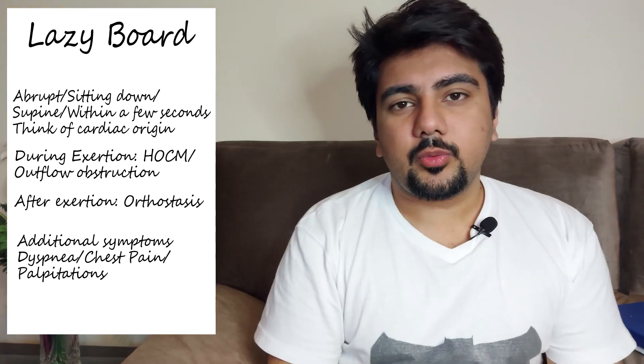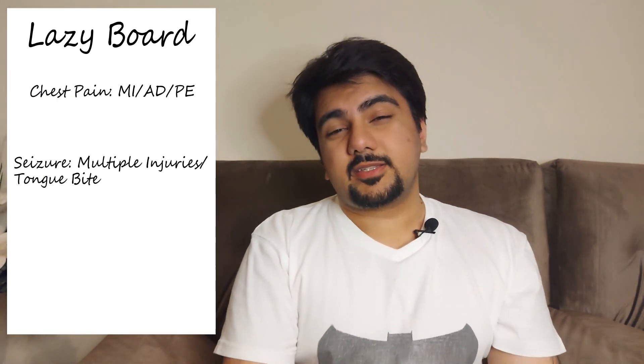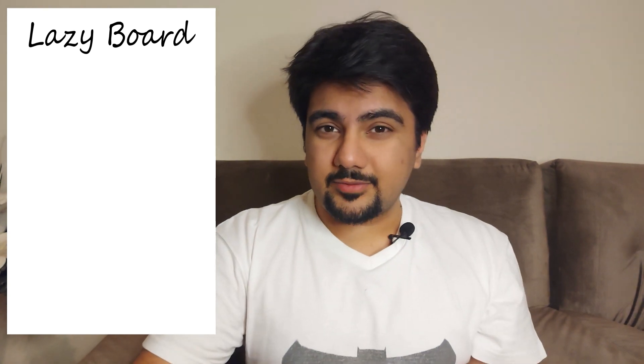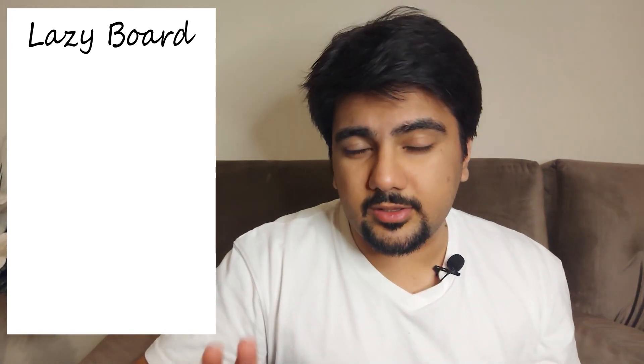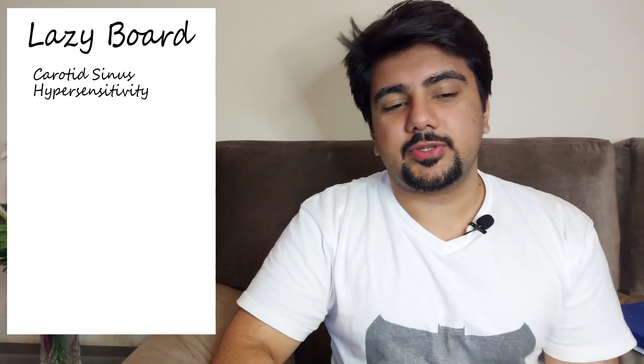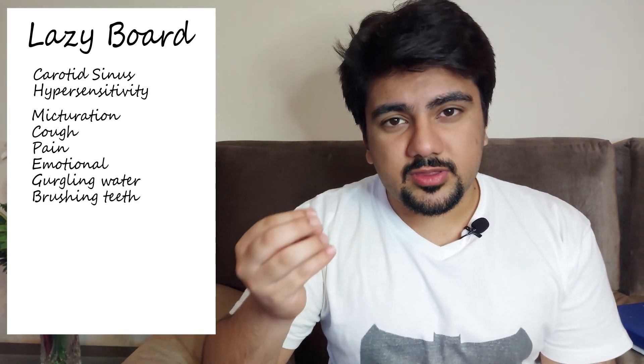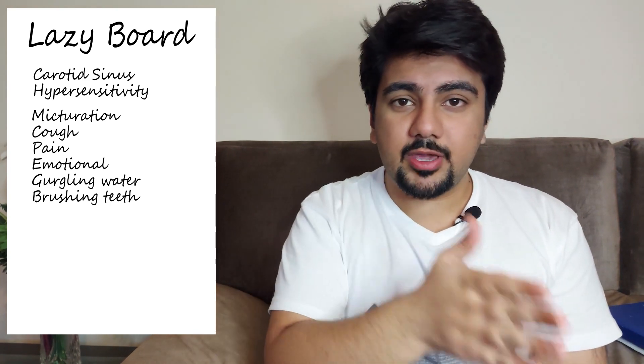If the patient has palpitations, think dysrhythmia. Dyspnea points toward a lung condition like pulmonary embolism — though only 0.2% of PE patients present with syncope. Chest pain should prompt thoughts of MI, aortic dissection, or PE. A seizure will typically leave multiple injuries across the body, and a tongue bite has very high sensitivity for seizures. In older patients, baroreceptors and carotid bodies are very sensitive, so bathroom activities like micturating, coughing, gargling, or brushing teeth can cause syncope.